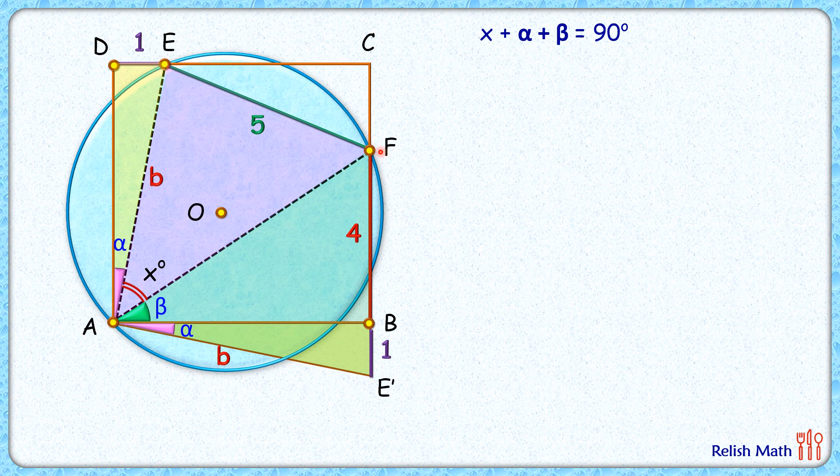In these triangles, we have side lengths b and b, another length as 5 (and FE' is also 5), and AF is common in both triangles. So by side-side-side congruency, we can say that this pink triangle is congruent to this green triangle.